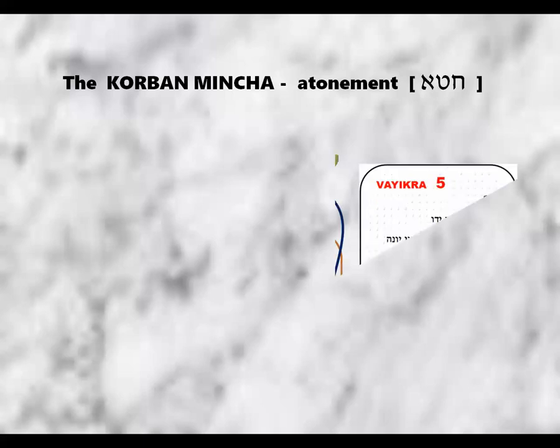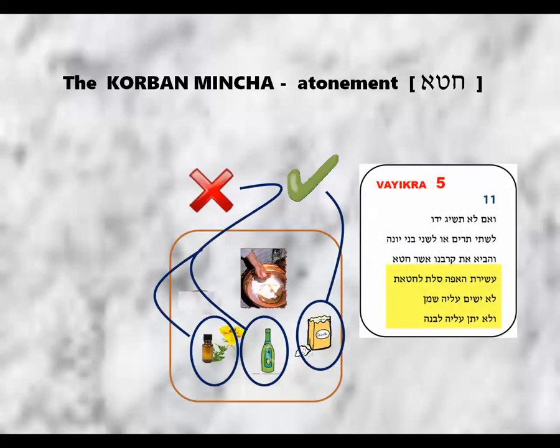As we shall surely see, there were many subcategories to the Karban Mincha, one of which was a Karban Mincha that was brought for the purposes of Atonement by an individual who could not afford an animal sacrifice. Vayikra 5:11 states that such a Karban Mincha contained no oil nor spices, just the fine flour.